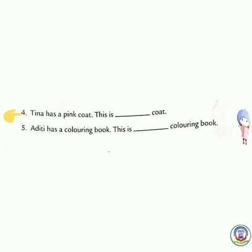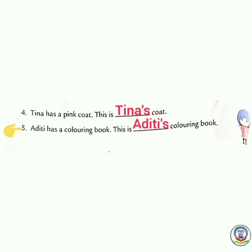Number four: Tina has a pink coat. This is dash coat. You have to write Tina's in the given blank. In the same way, number five: Aditi has a coloring book. This is dash coloring book. Write Aditi's in the given blank.